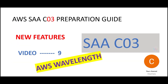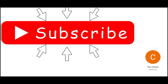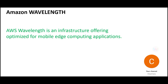We just saw the use cases where Wavelength is used, but what is Wavelength? This is an infrastructure offering. Listen carefully — this is an infrastructure offering. That means that for example if you have EC2 or any services, those are software or platform offerings. This one is an infrastructure offering, meaning it goes to the level of your availability zones, your data centers — it's an infrastructure which is created and you can use that.